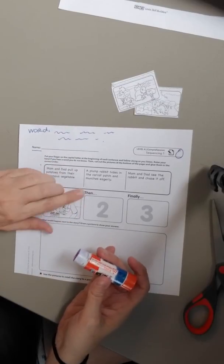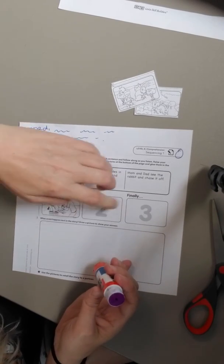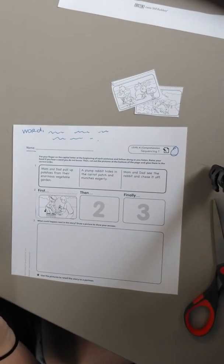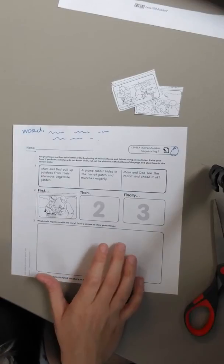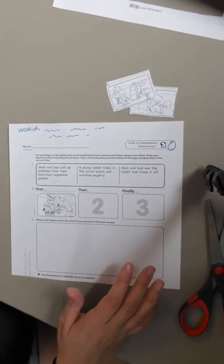All right. So then now what you're going to do is you're going to decide what is going to happen after they pulled up the potatoes and what happens last. Then you're going to come down here and decide what do you think could happen next in the story and draw a picture. So go ahead and work on this.